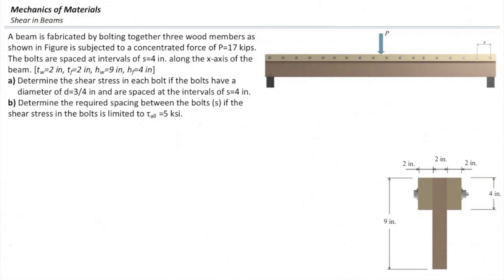A beam is fabricated by bolting together three wood members as shown in the figure. The beam is simply supported on both ends and subjected to one concentrated force at the middle. The magnitude of that force is 17 kips, and the bolt spacing is 4 inches. The dimensions of the section are provided. We are looking for two parameters.